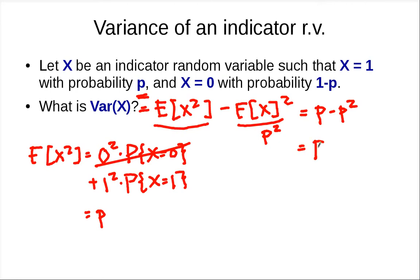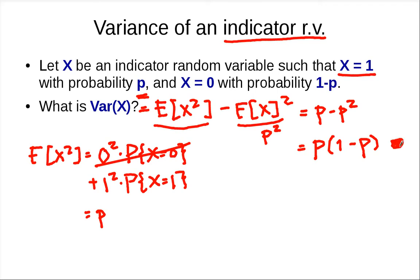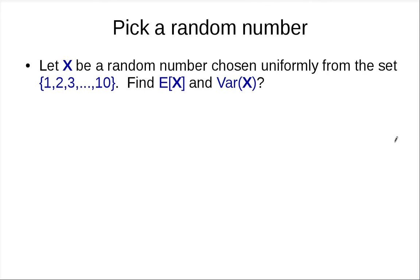The usual form we'll use is p times (1 minus p). So the variance of an indicator random variable — one that takes only values 0 and 1 — is p(1-p). Now let's look at a larger example. Let x be a random number chosen uniformly from the set {1, 2, ..., 10}. Find the expected value of x and the variance of x.